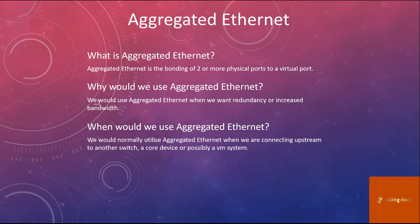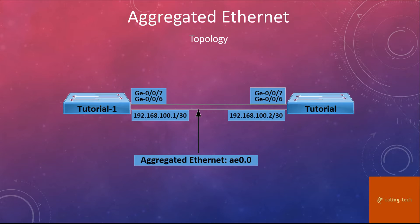For this lesson, which is going to be a quick one, we're going to utilize the following topology. From previous lessons we'll continue with tutorial VMX and tutorial 1 VMX, and we'll configure the physical interfaces ge-0/0/6 and ge-0/0/7 on both devices. We're going to give them a /30 subnet in the 100 range — 192.168.100.1 and .2. The aggregated ethernet channel is going to be ae0, and unit 0 is the logical unit.